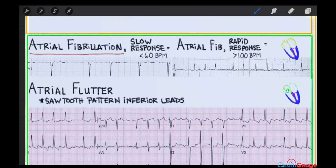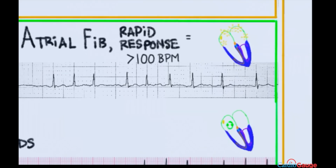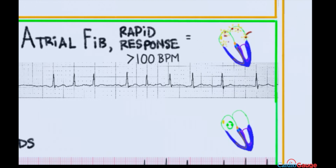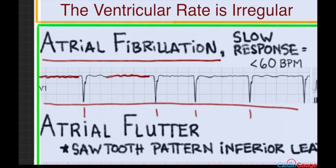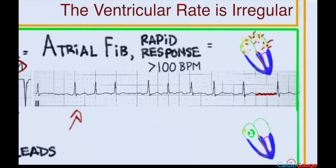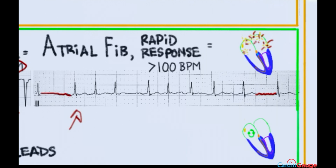On to atrial fibrillation, a very common heart rhythm problem — something like 6 million Americans have it. In atrial fibrillation, there are lots of different little foci in the atria going off chaotically, along with locations in the pulmonary veins, creating a situation with no clear P waves — just a wiggling baseline. In the slow response example, there's no clear P wave activity and the QRSs are happening at less than 60 beats per minute — atrial fibrillation with slow response. In atrial fibrillation with rapid response, the QRSs occur at greater than 100 beats per minute. Atrial fibrillation with a controlled response would have a rate between 60 and 100 beats per minute.